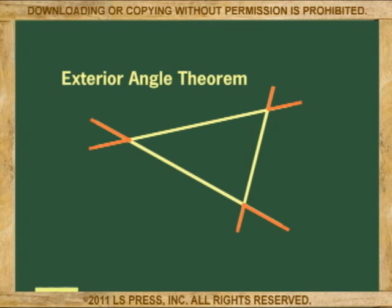Notice that an exterior angle forms from the extension of any of the lines of the triangle. Anyway, the exterior angle theorem says that the size of any exterior angle is equal to the sum of the two far away interior angles of the triangle.